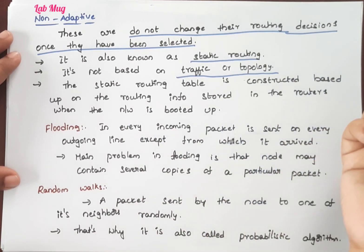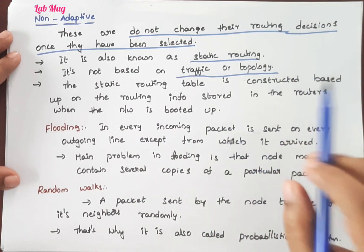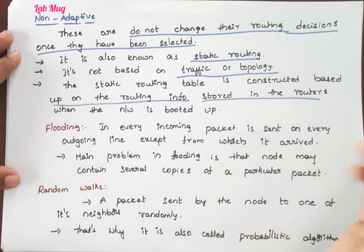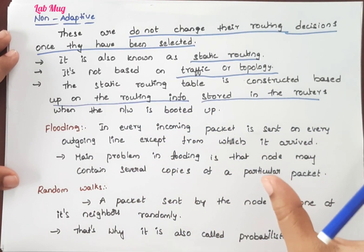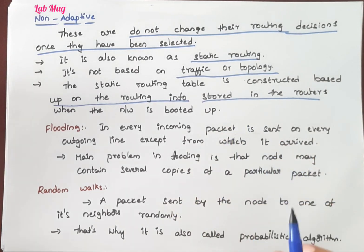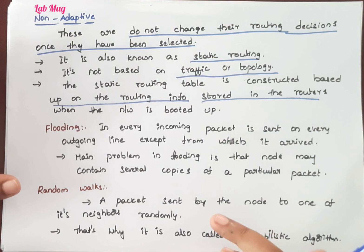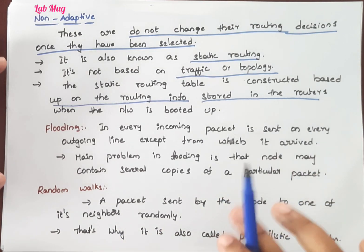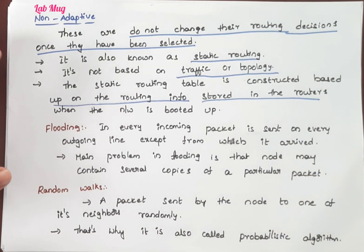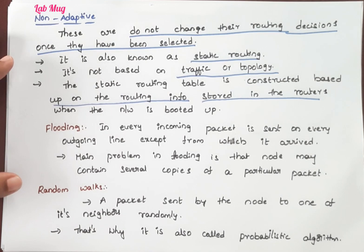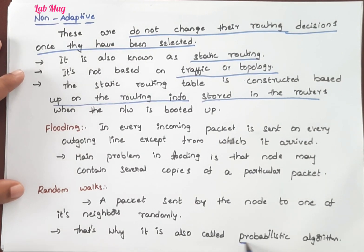In static routing, the routing table is created once and stored in the routers; we do not change the routing table. There are two types under non-adaptive: flooding and random walk. In random walk, a packet is sent by the node to one of its neighbors randomly — one neighbor is chosen randomly. So we call it a probabilistic algorithm.